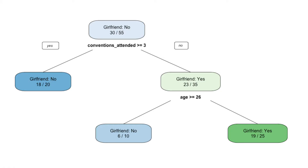What is Random Forest? Random Forests are based on decision trees, so let's look at a graphic. Let's say you're trying to predict whether an individual has a girlfriend, using two variables: how many Comic-Con conventions they have attended, and their age. This decision tree gives us a model we can use to fit our data.